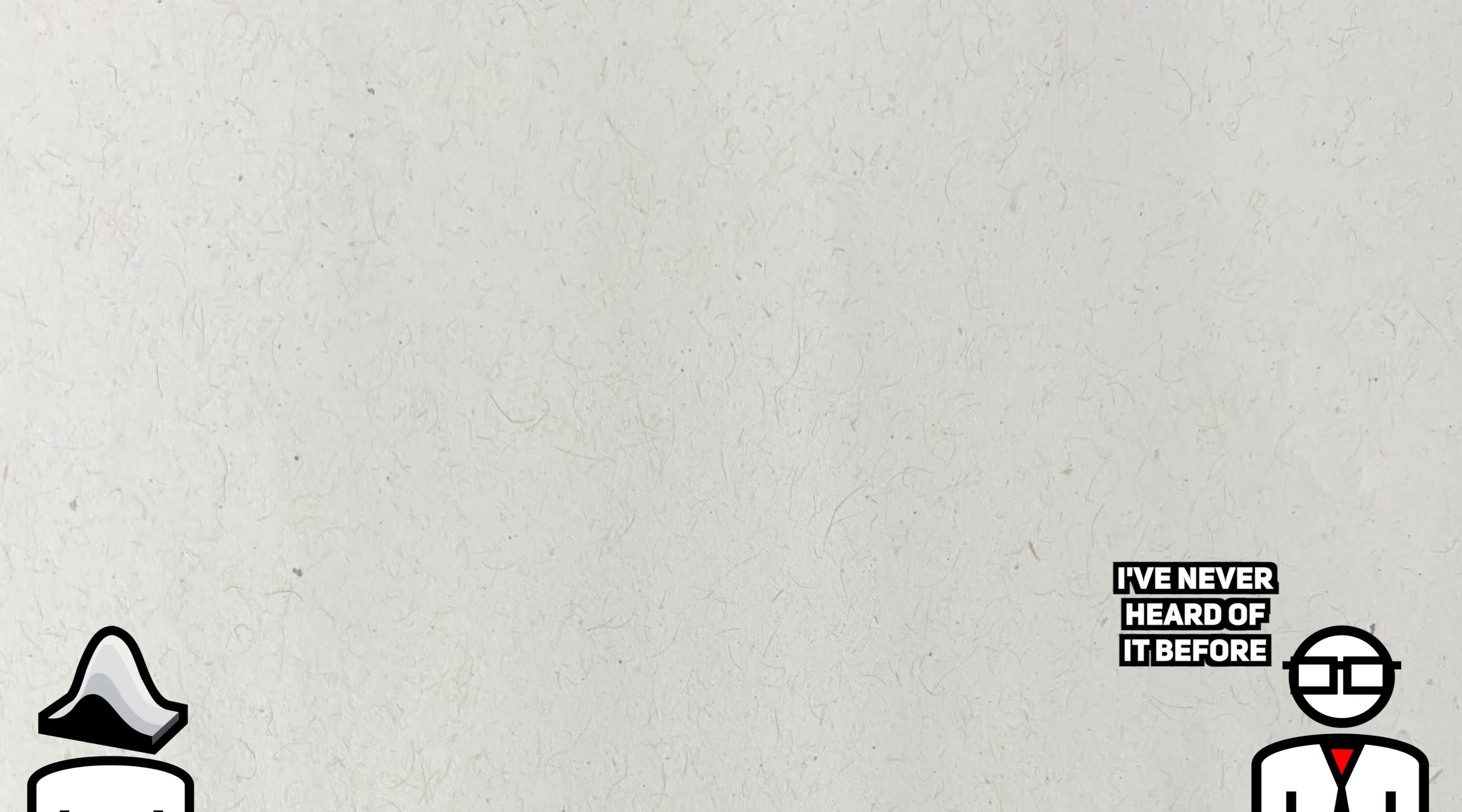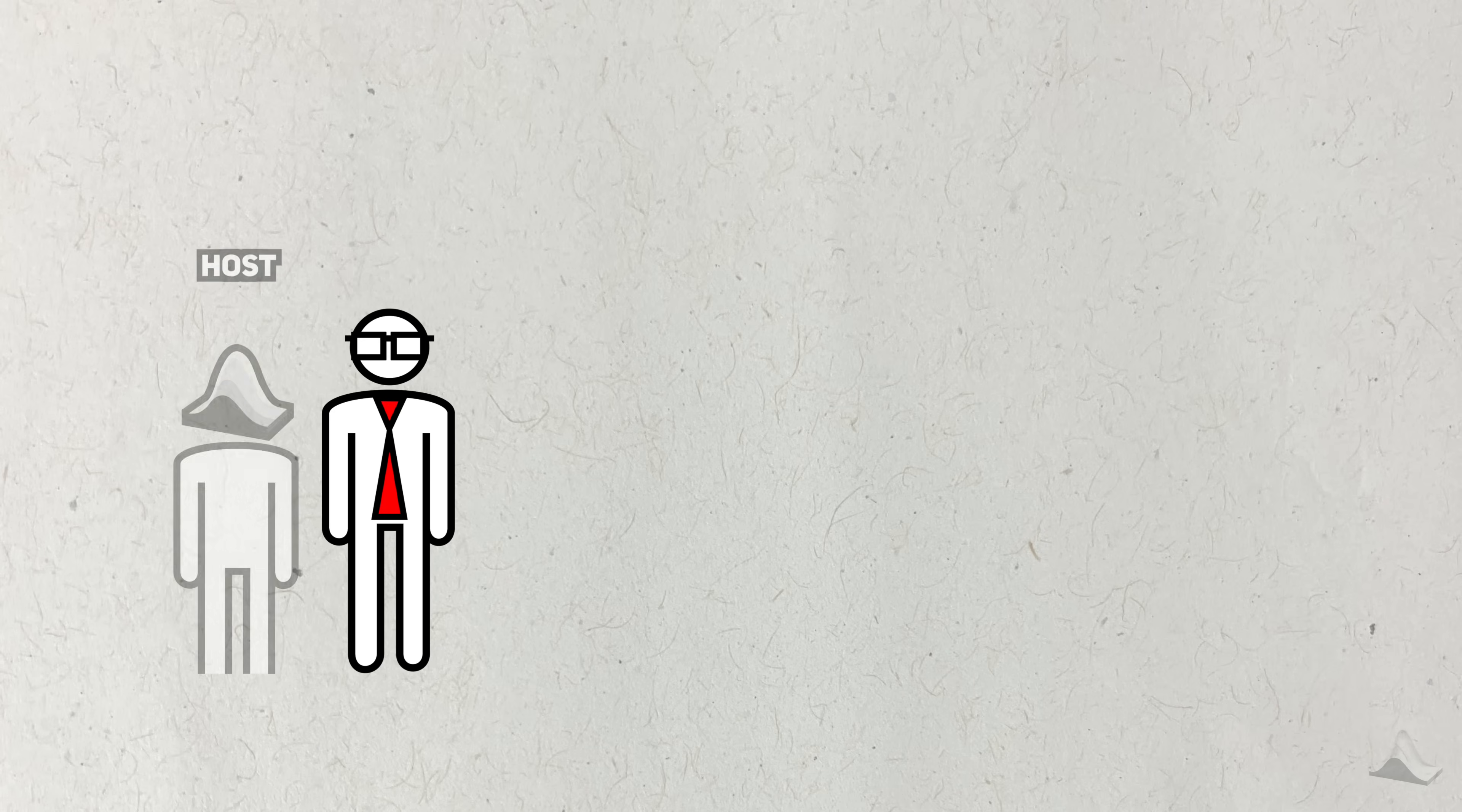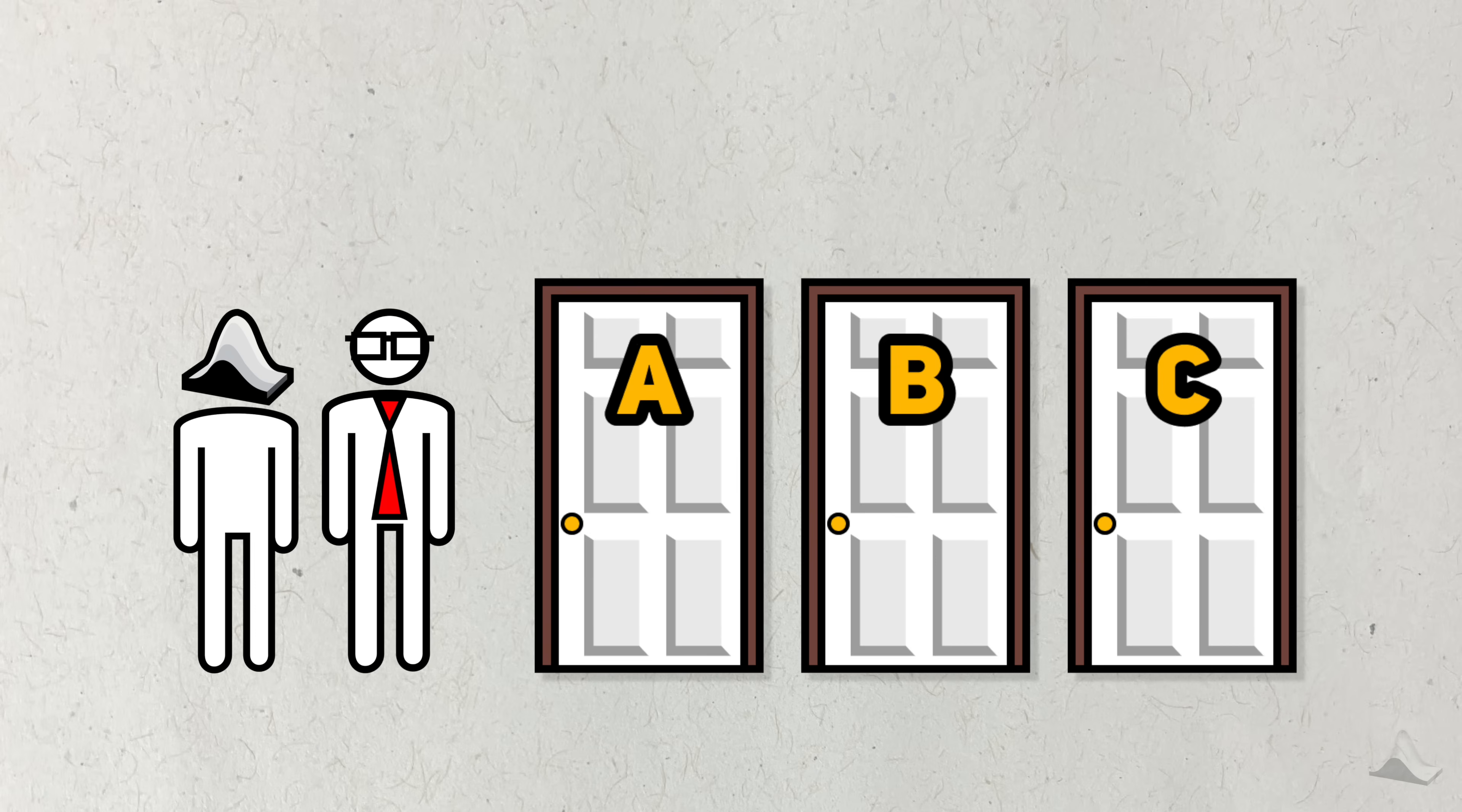If you've never heard about the Monty Hall problem before, don't worry. I'm going to lay it out here. So listen carefully. You are part of a game show and you're on stage with the game host. In front of you, there are three doors. One of these doors has a cash prize behind it. If this cash prize gets revealed, then you win. Otherwise, you get nothing. Nada.